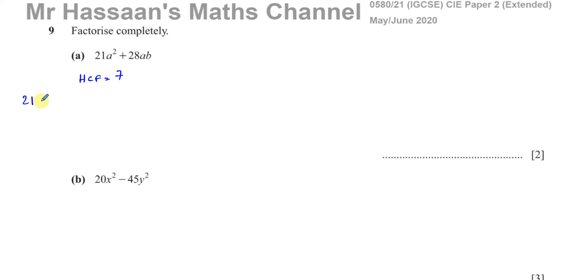If you wrote down the factors of 21, you have 21 times 1 and 7 times 3. Those are the only factors of 21. And for 28, you have 28 times 1, 14 times 2, and 7 times 4. Those are the only factors of 28. You can see 7 is the highest common factor.